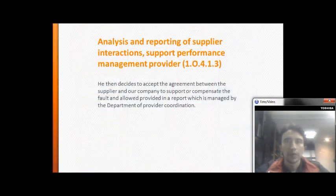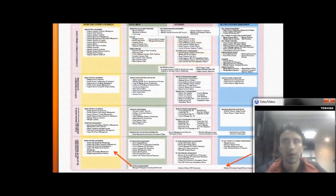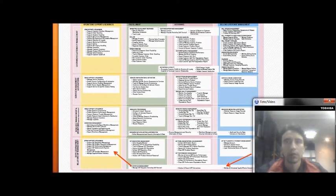Analysis and report for supplier interactions and support performance management: a formal arrangement is established between the supplier and our company to support compensation for the service failure, and a management report is produced for the department.